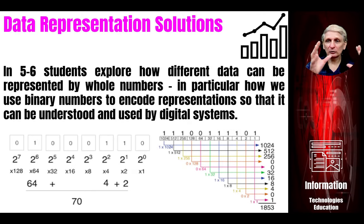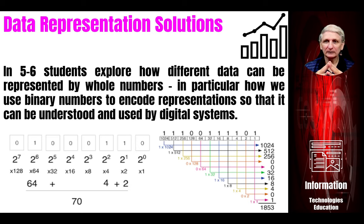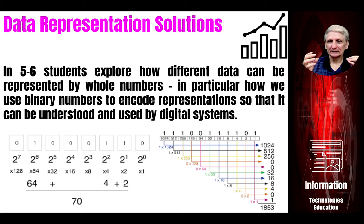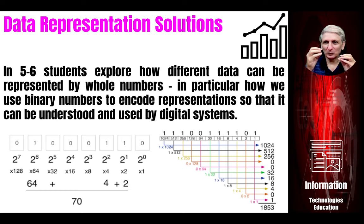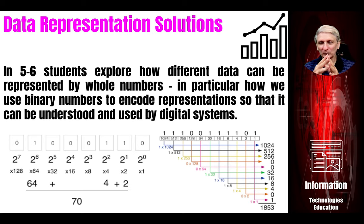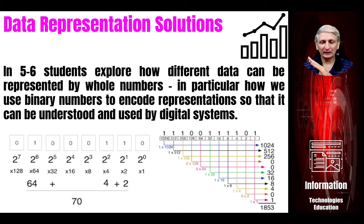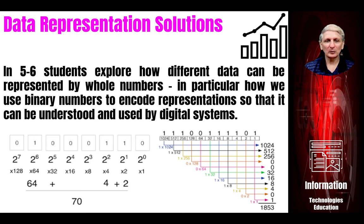Some approaches students can take to exploring these concepts include looking at how we can represent whole numbers in binary — how to calculate what a decimal value would represent in binary and vice versa, taking a binary number and finding what it represents in decimal. There are other forms as well that we look at in later years, such as octal and hexadecimal, but in primary we primarily focus on binary and decimal conversion.